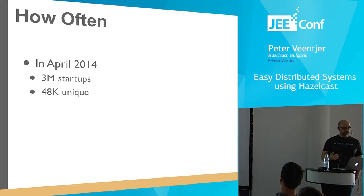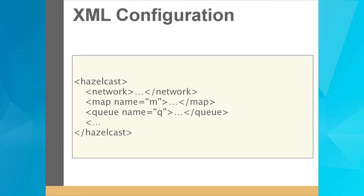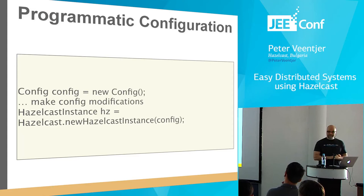So let's do some coding. To create a Hazelcast cluster, it's very simple — just one line: HazelcastInstance hz = Hazelcast.newHazelcastInstance(). You get back a HazelcastInstance which is embedded within your JVM. Hazelcast can be configured in many different ways. Most people use XML configuration. We also have a programmatic API, which is very useful because XML is very static — sometimes you want more dynamic behavior, and with the programmatic API you can easily do that.